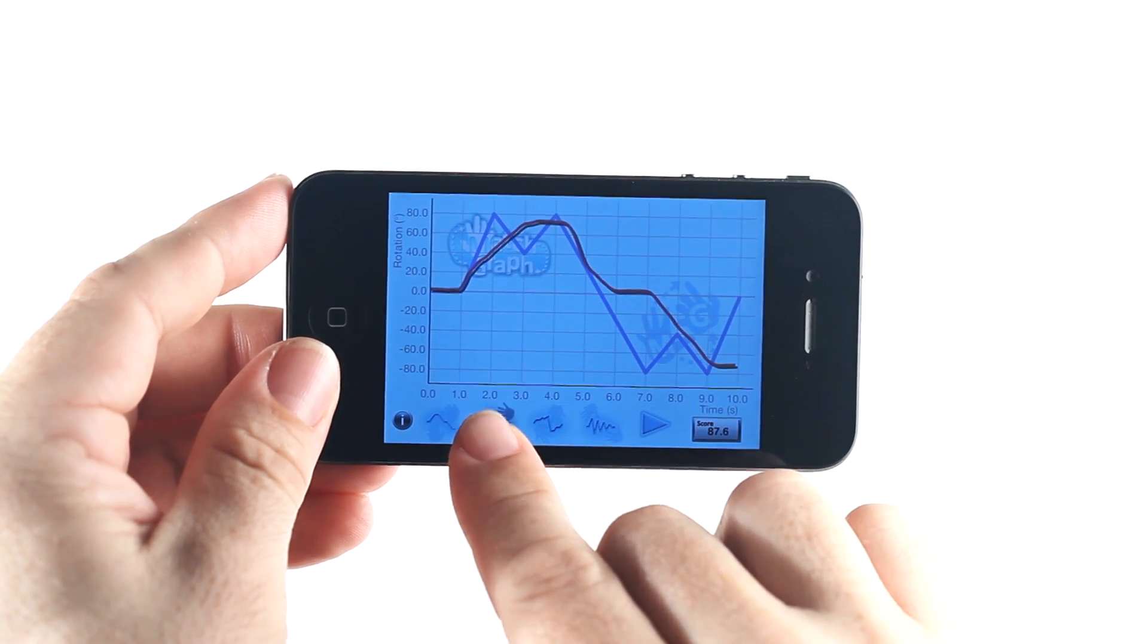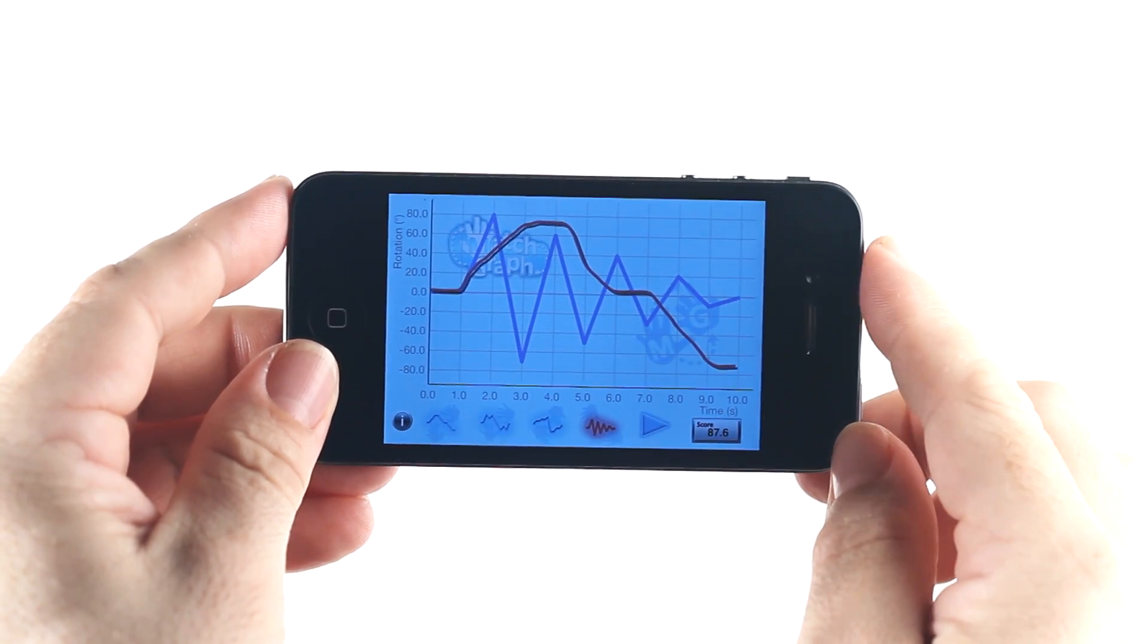You can select your target graph from one of the four different patterns at the bottom. They start out easy but get progressively more difficult.